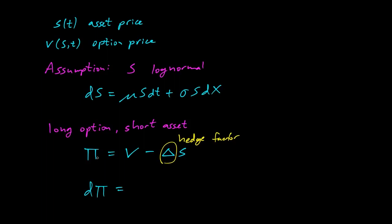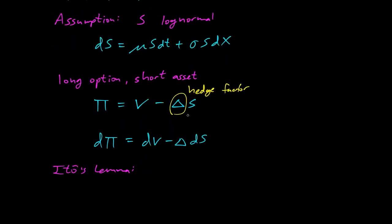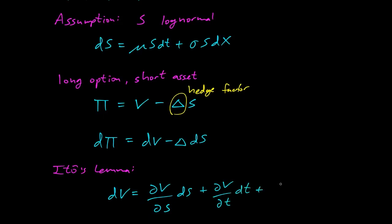Let's take a derivative. The change in the value of our portfolio is dV minus delta dS. Now dV — we can use Ito's Lemma, specifically the multi-dimensional form. We get the first derivative parts: partial of V with respect to S times dS, partial with respect to t times dt. And the second order part: one-half sigma squared S squared, partial of V with respect to S squared, dt.